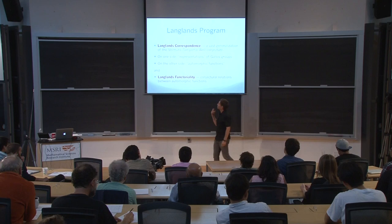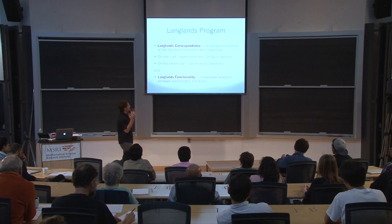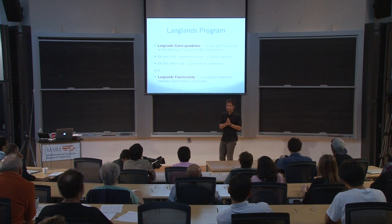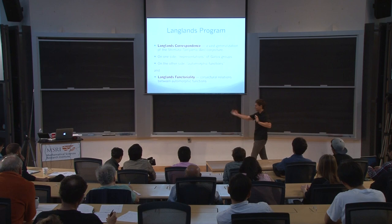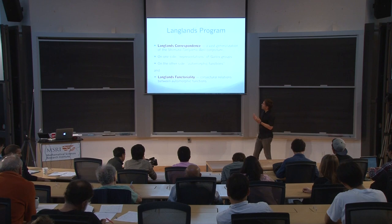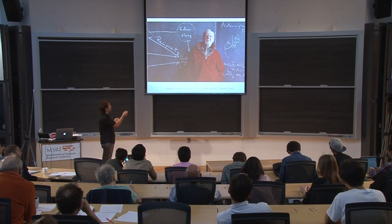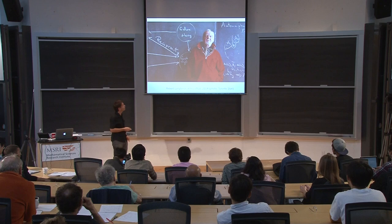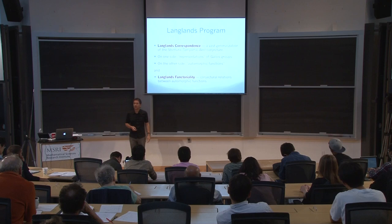The Langlands program essentially consists of two parts. The first is called the Langlands correspondence, which can be thought of as a vast generalization of the Shimura-Taniyama-Weil conjecture. That conjecture relates objects of totally different nature — from number theory and from harmonic analysis. On one side are representations of Galois groups — you can see Galois theory appears prominently on the blackboard behind Langlands in that photograph. On the other side are the so-called automorphic functions, the characters living in the world of harmonic analysis.